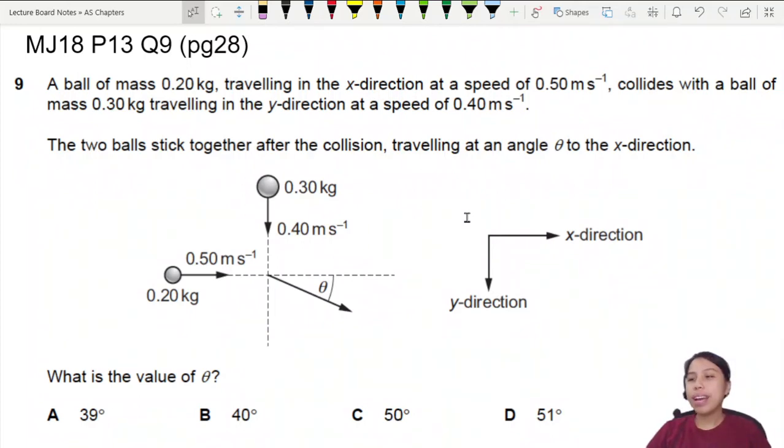Question 9. A ball of mass 0.2 kg traveling in the x direction. So that's this fellow over here. Speed 0.5 collides with another ball in the y direction. Oh wow, this is fancy. So we have ball x. No, I don't think we'll call them names. We'll just leave them without names.